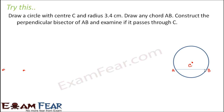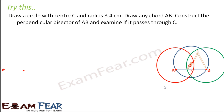To draw the perpendicular bisector of AB, just treat AB as a line segment. Take the compass, consider A as the center, and set the radius slightly more than half the length of AB. Draw an arc. Then consider B as the center, keeping the same radius — slightly more than half AB — and draw another arc. The red circle has center A and the green circle has center B.